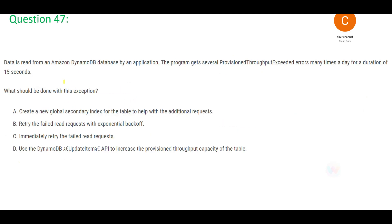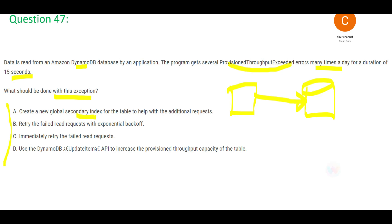Let's look at the next question. You have an application with a DynamoDB database. When the application tries to access data, it gets ProvisionedThroughputExceeded errors many times a day, for a duration of 15 seconds each time. What should be done? The first option says create a Global Secondary Index. This error happens when the provisioned read and write capacity of the table gets exceeded.